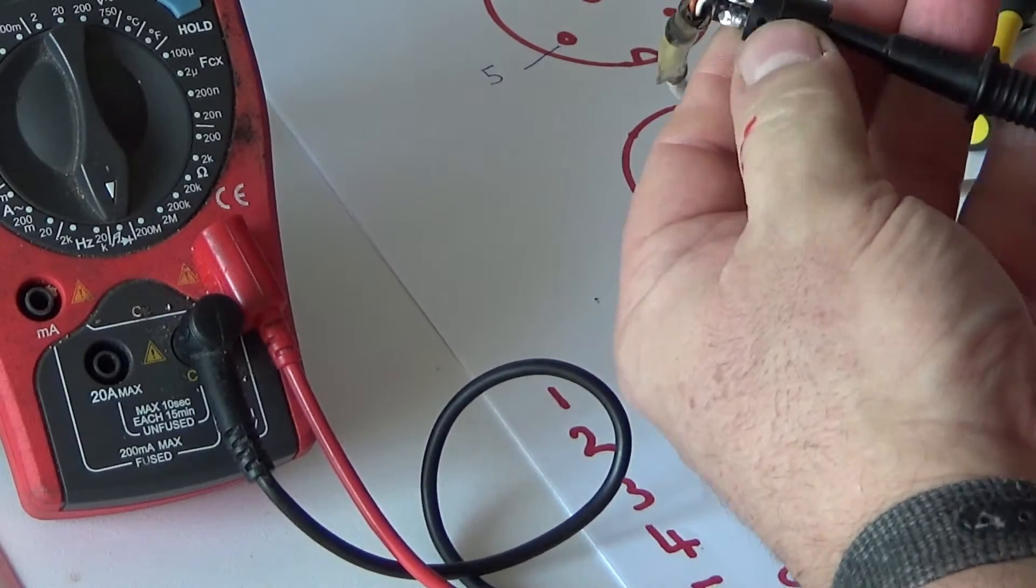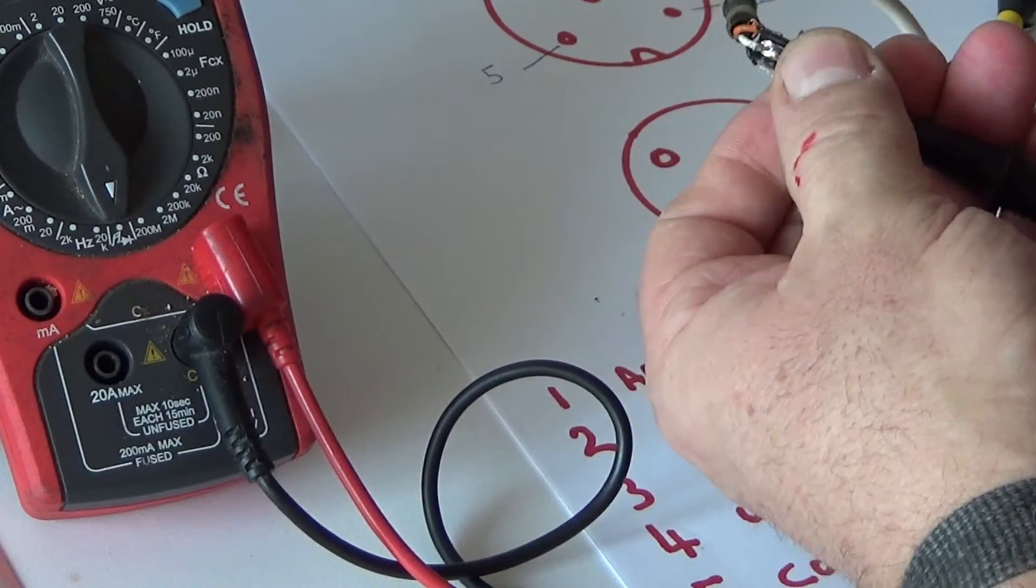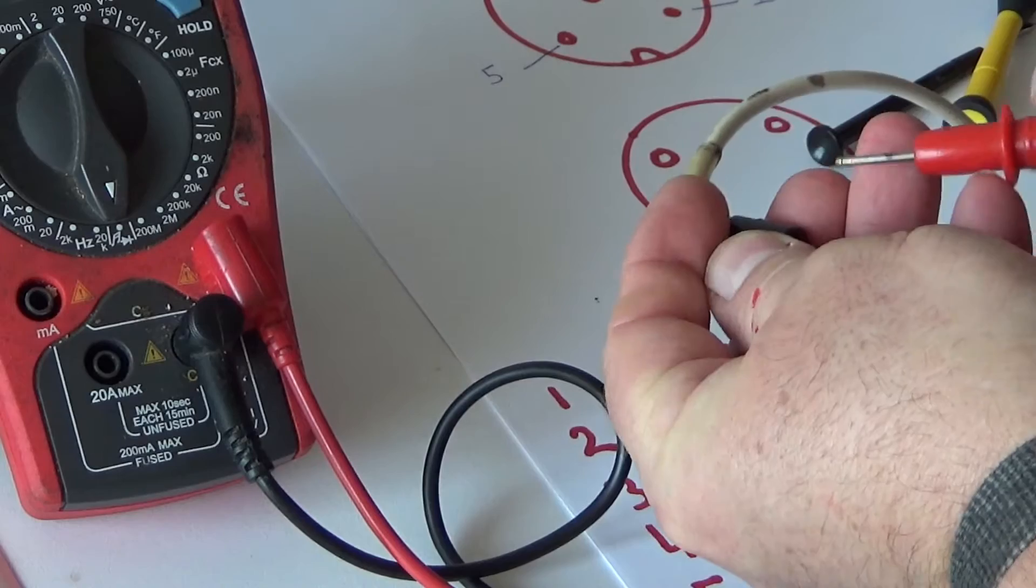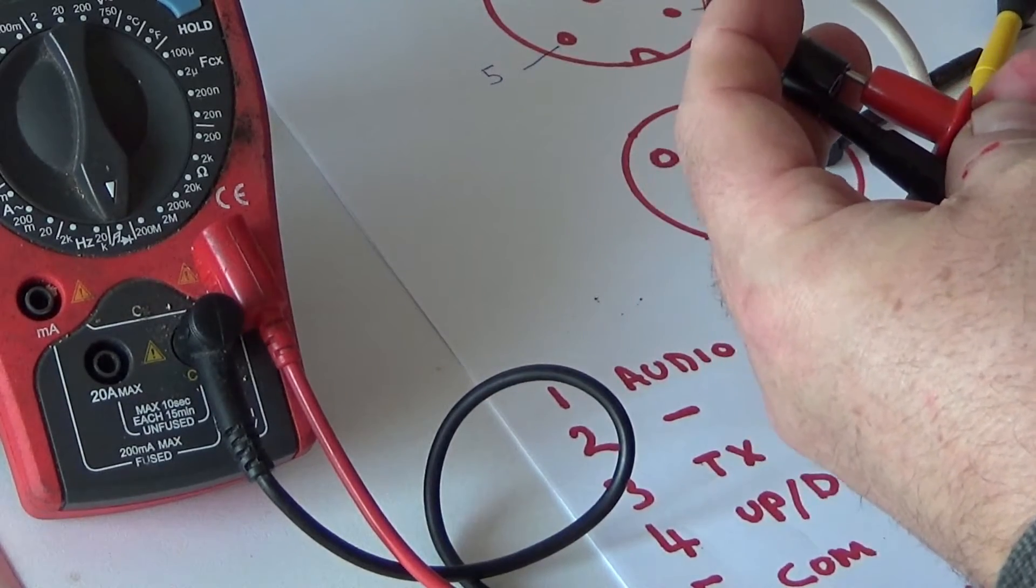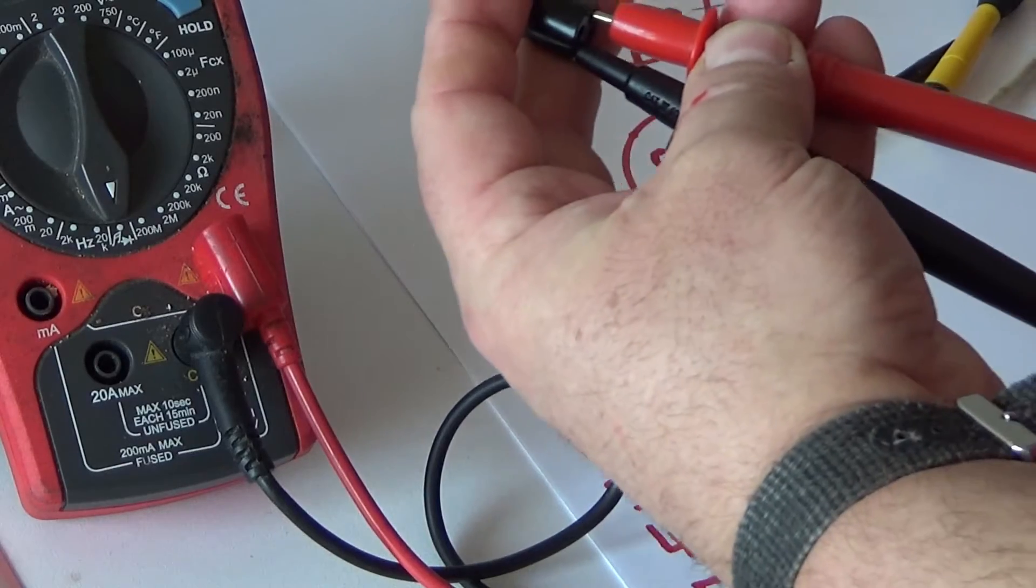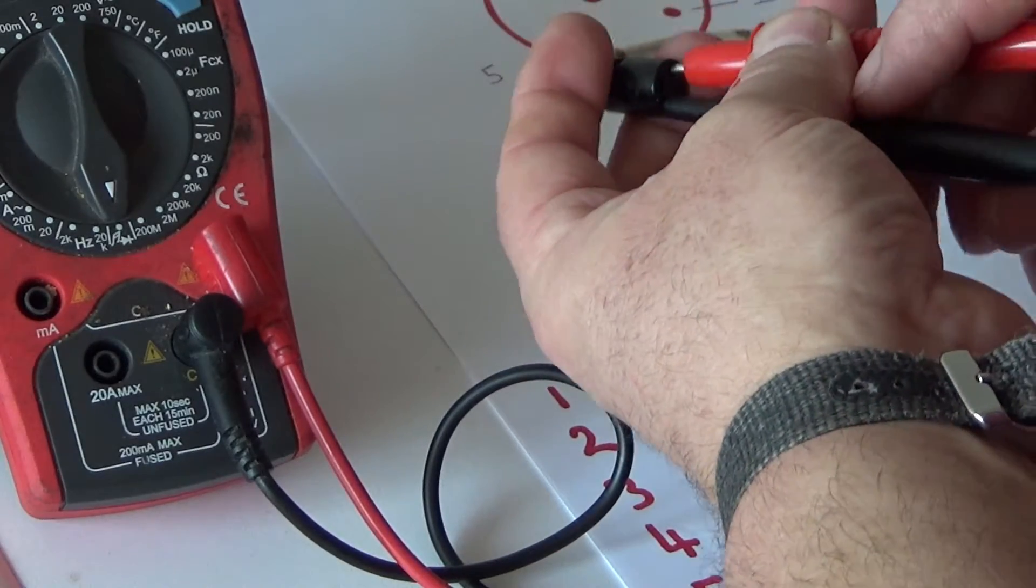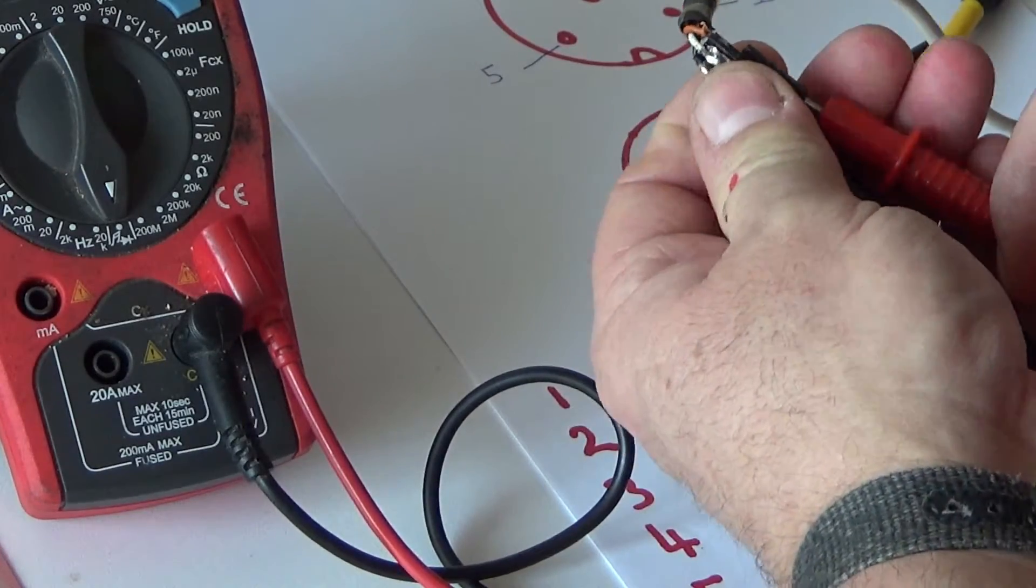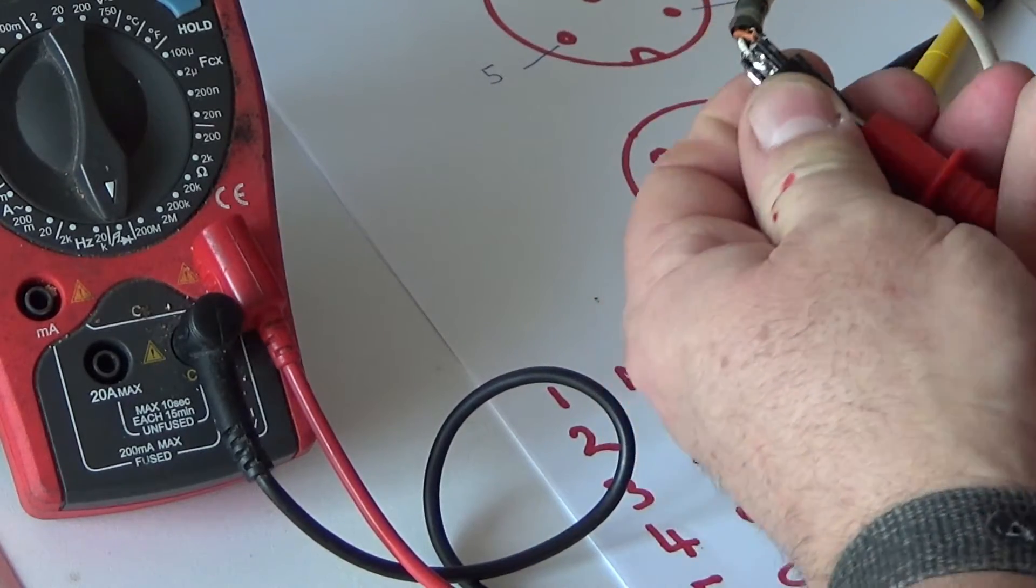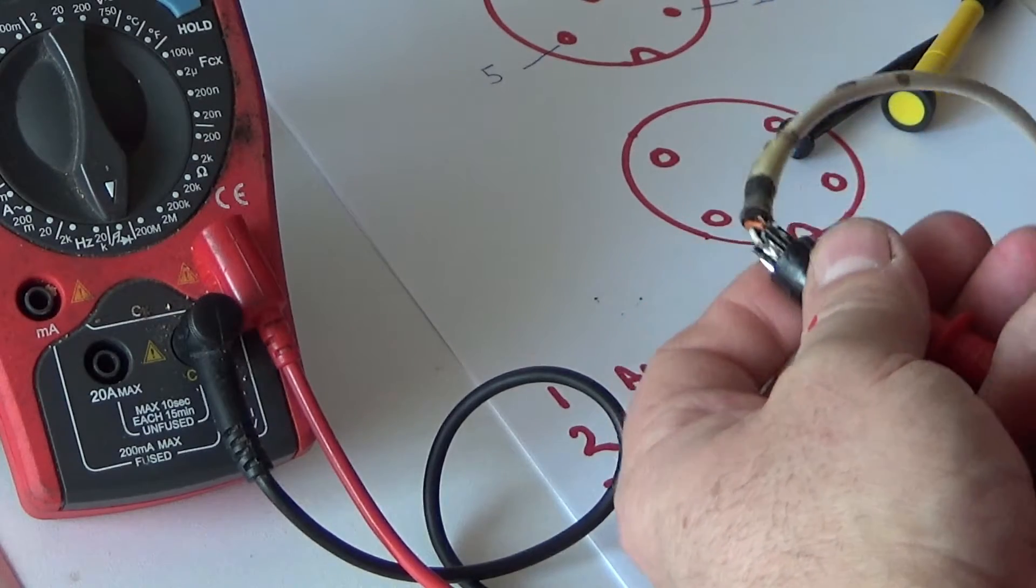Let's just find that TX wire again. Now I'm pressing the microphone down, it's transmitting. So I now know that the TX wire is the orange wire.